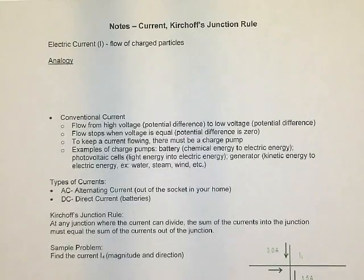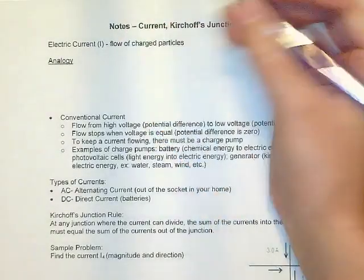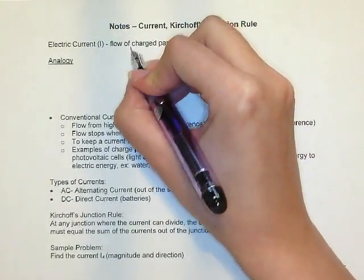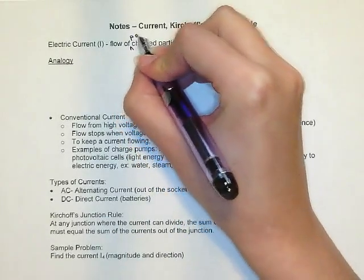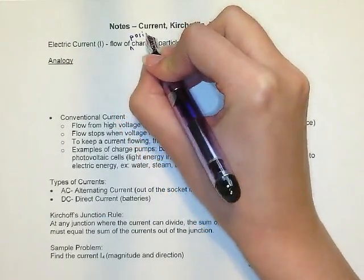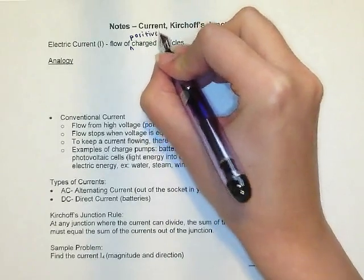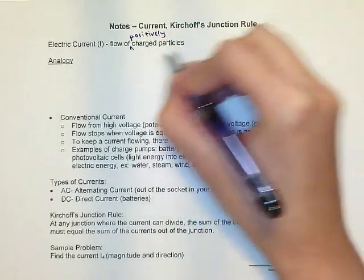Alright, let's talk about electrical current. Electrical current is defined as the flow of charged particles. Typically, we talk about the flow of positively charged particles. This is called conventional current.